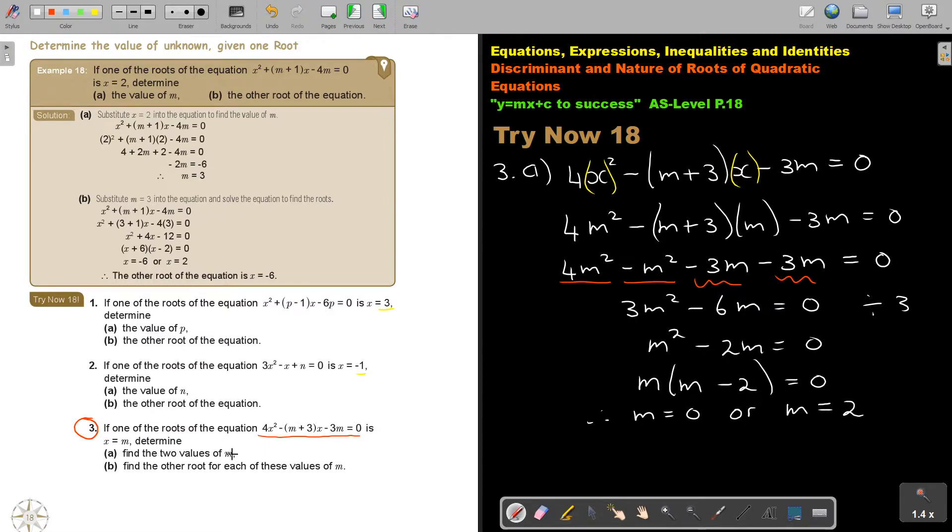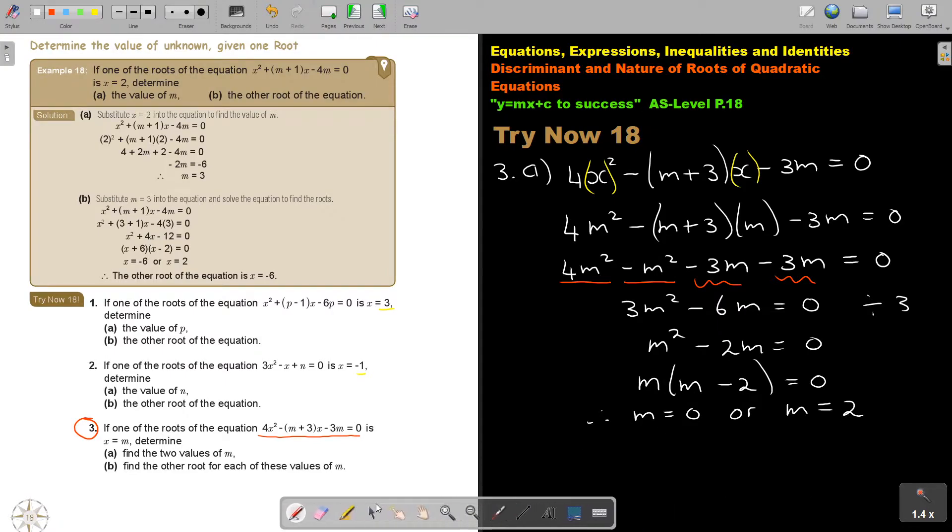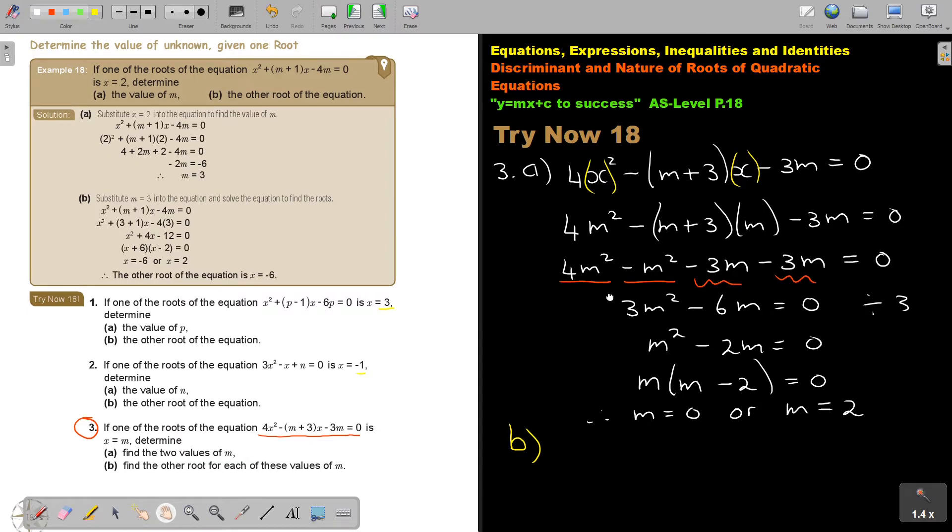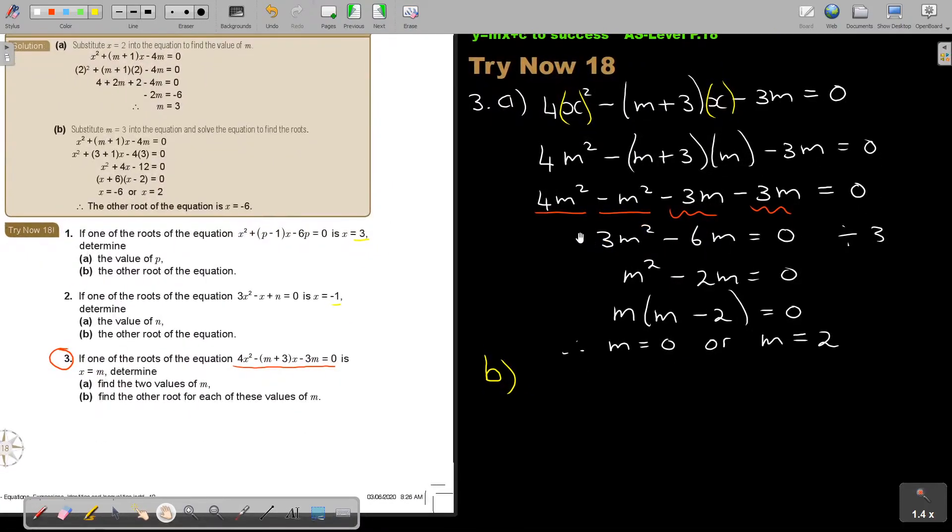So find the two values of m. Now this is number a. Now I go to number b. They say find the other roots for each of these values. So I must work with both. That's why I said I gave you this one.